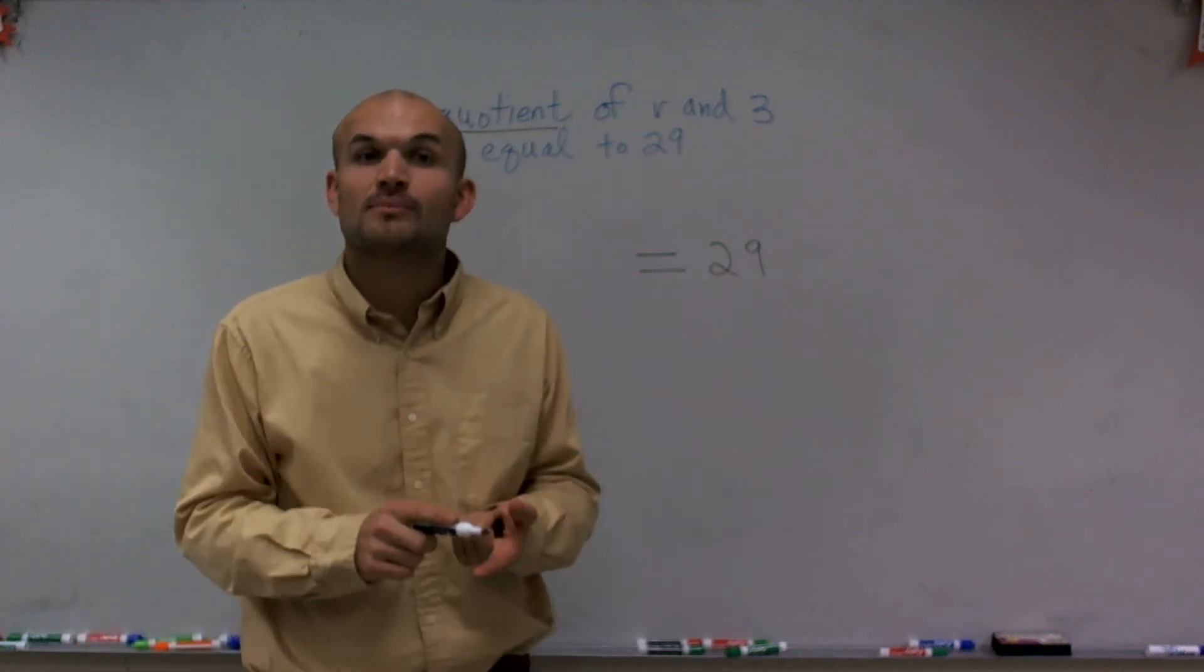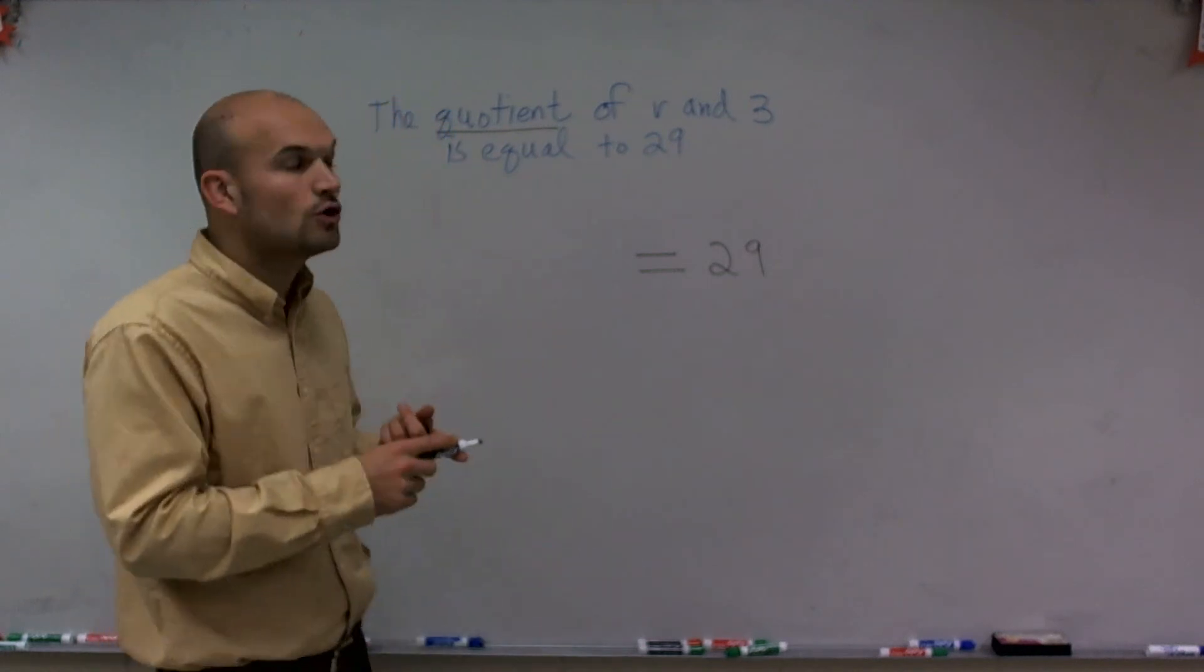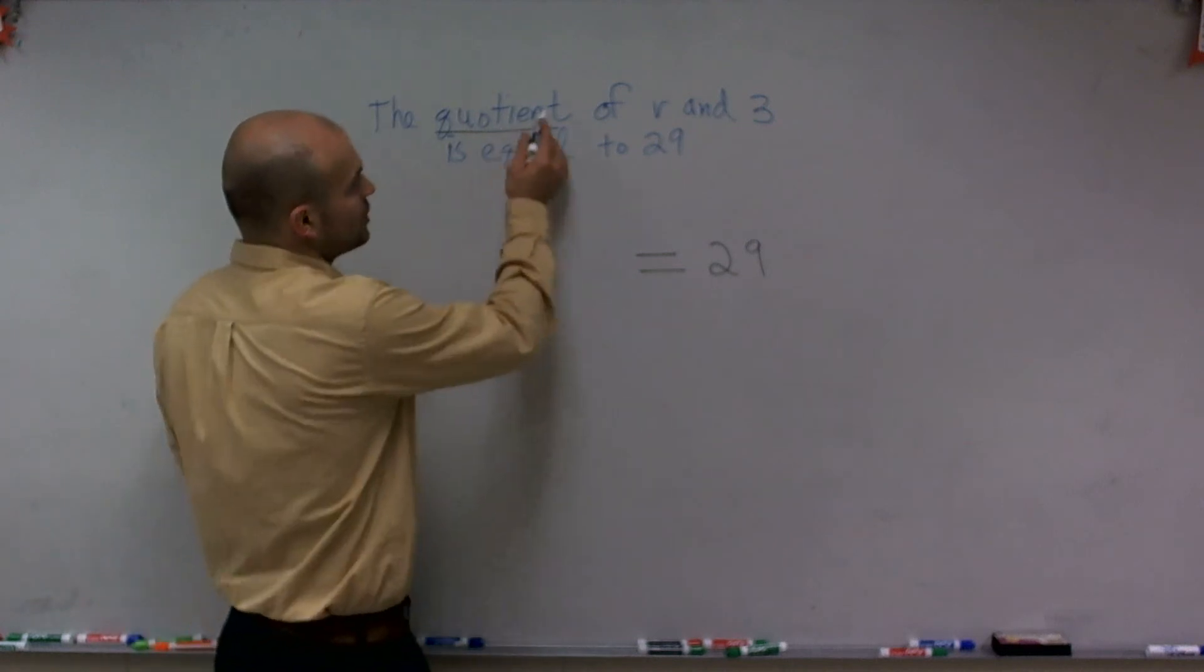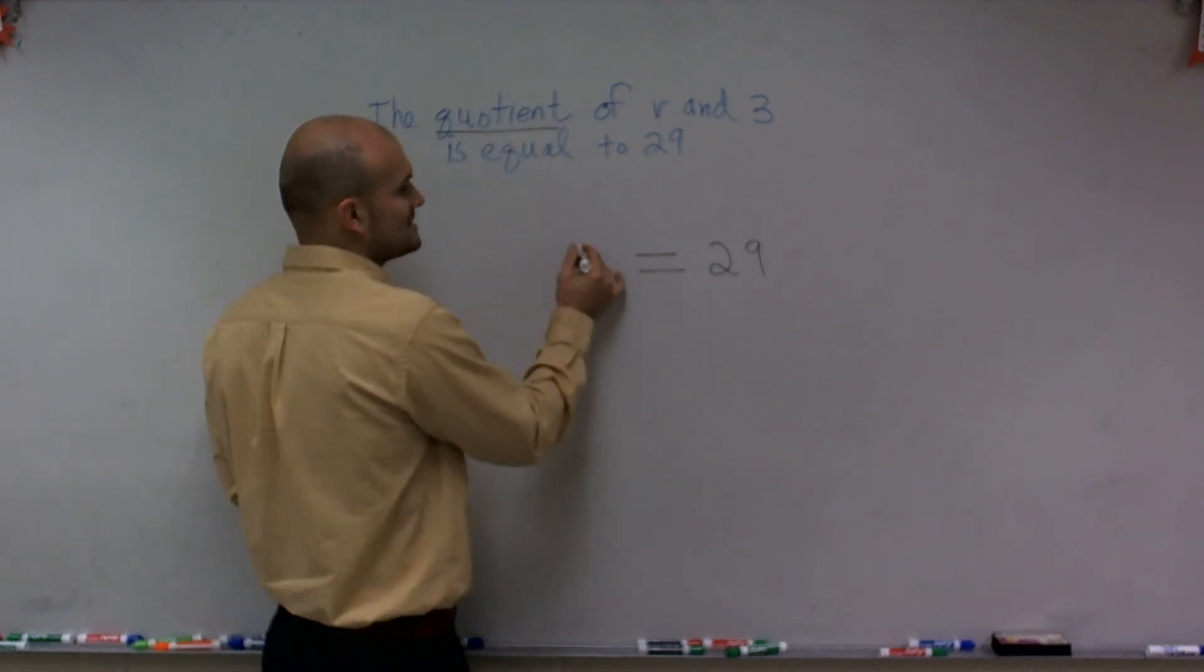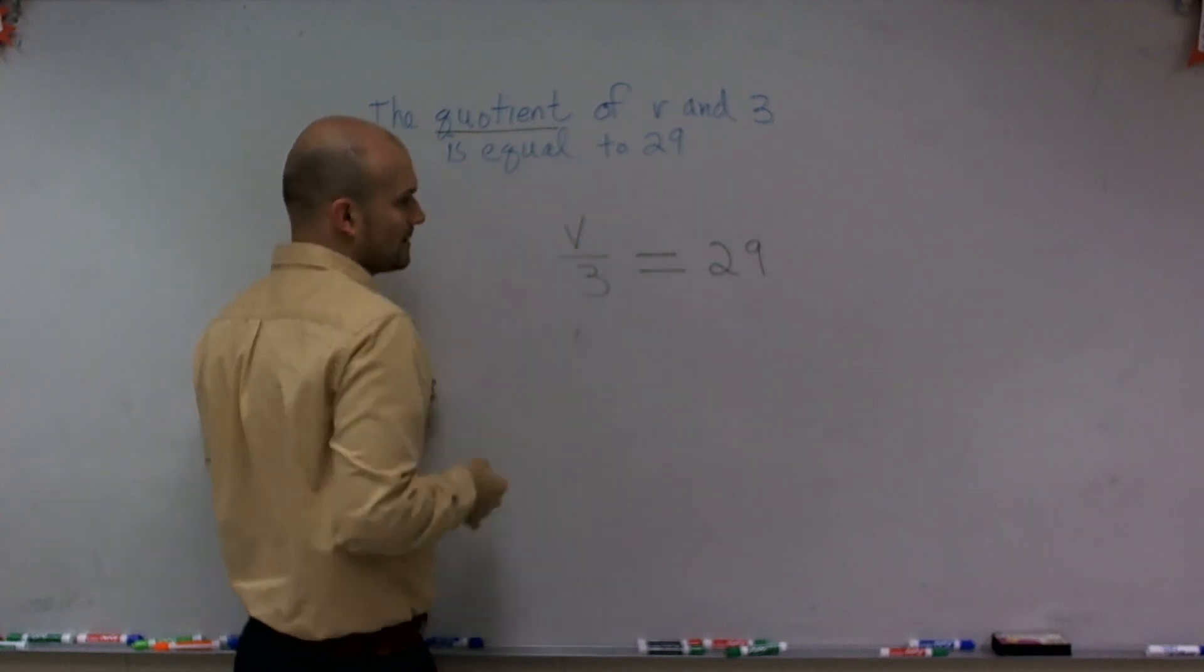A lot of times we say one number divided by another, or you could say the quotient of the two numbers. So if I say the quotient of v and 3, what that means is I'm going to take v and then divide it by 3. And that is going to equal 29.